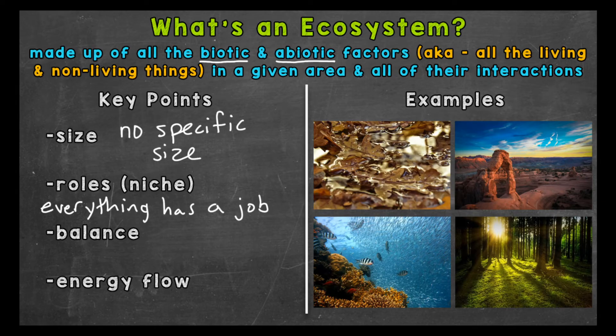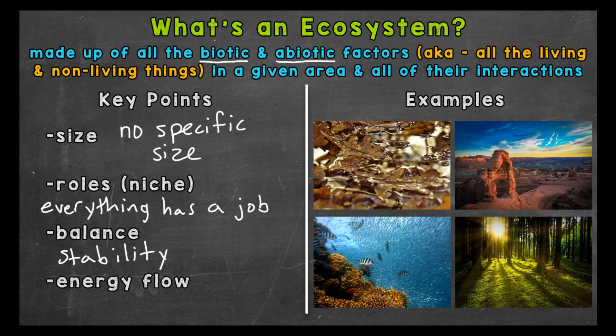That brings us to balance. All species are very important to the health and balance of an ecosystem. Balance keeps everything stable. Disrupting the balance — for example, an organism's population decreasing, or maybe a new organism being introduced, like an invasive species — will throw off the balance and health of the ecosystem.